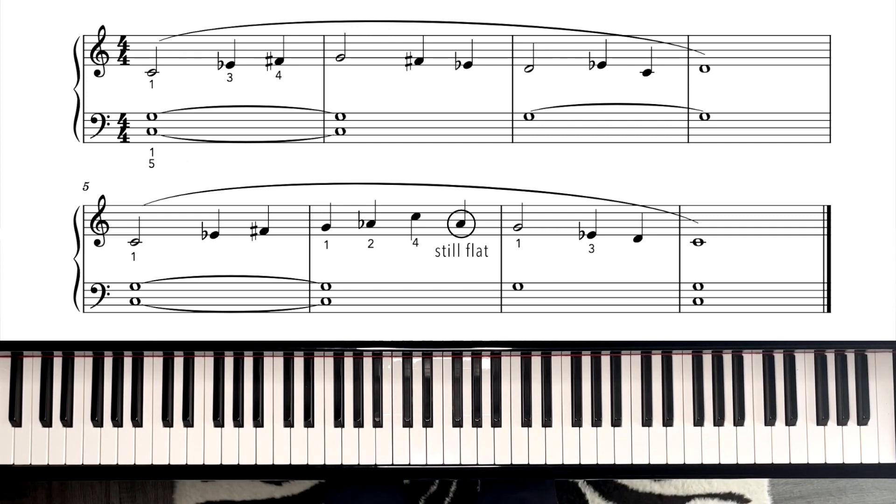The second phrase is a little bit trickier because there's an extra thumb crossing on the G, and we have an A flat as well. So starting on the C, one, two, three, four. Cross the thumb under to the G, number one. One, A flat, C, A flat, G, crossing over.